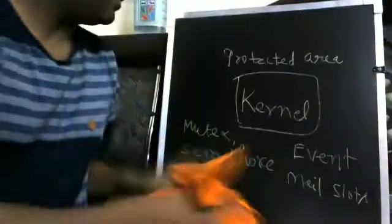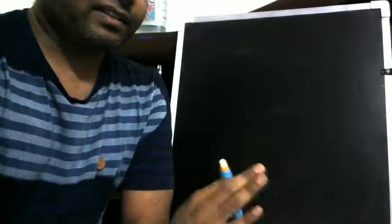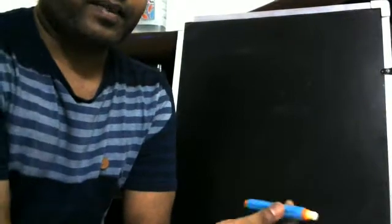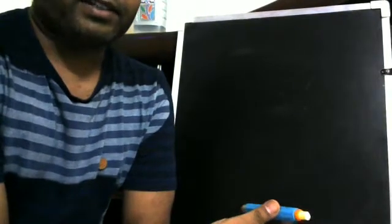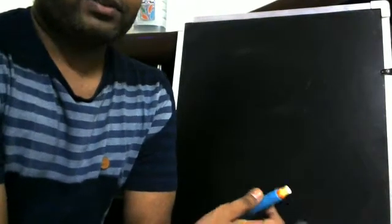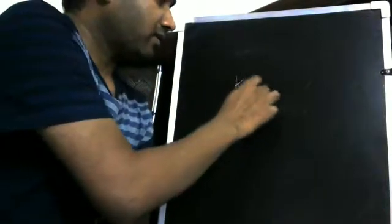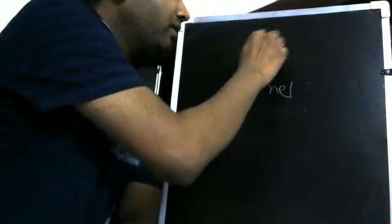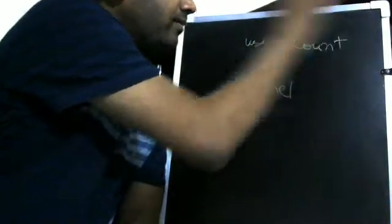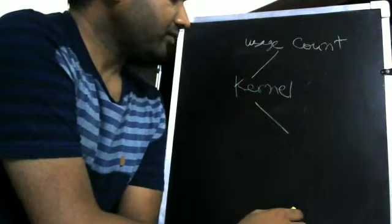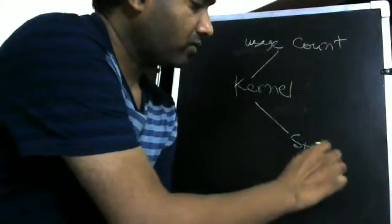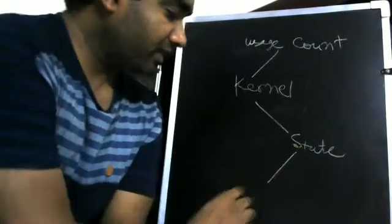We need to understand what a kernel object is and what it contains. Just like a vehicle has properties such as how many tires it has or what kind of fuel it uses, kernel objects also have properties. The main properties are: uses count, and state.